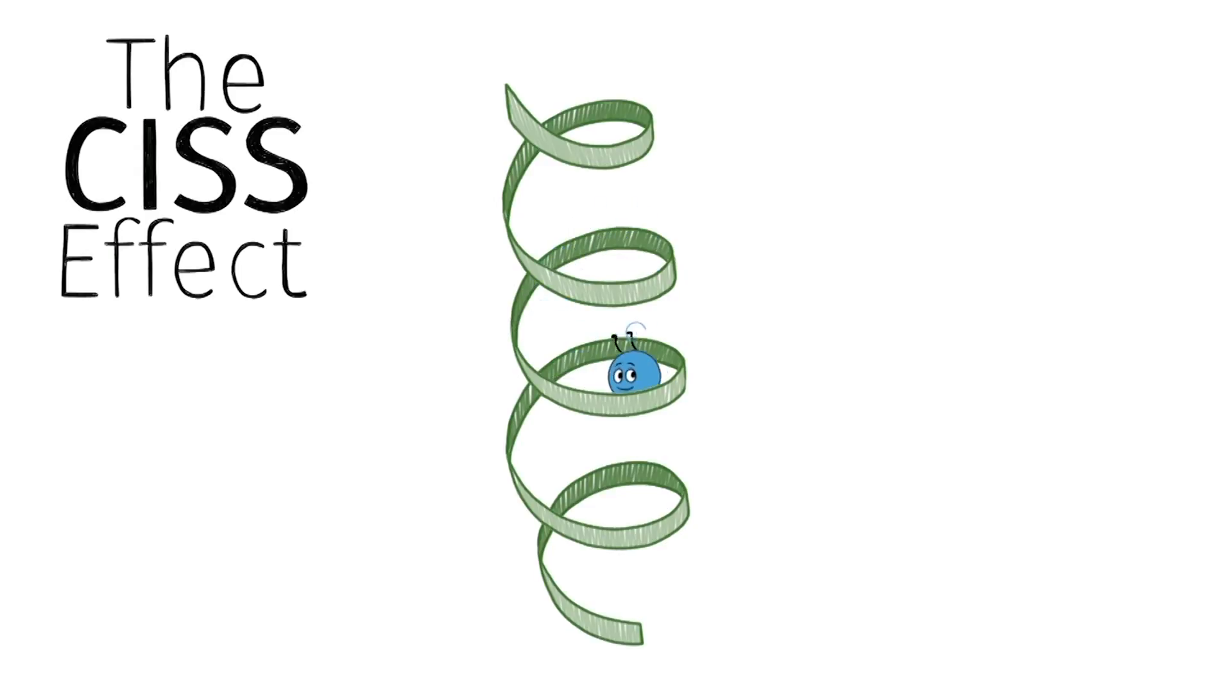This effective magnetic field acts on the magnetic dipole of the electron, namely on the spin of the electron. Therefore, when electrons are transferred through chiral molecules, one spin is preferred over the other.